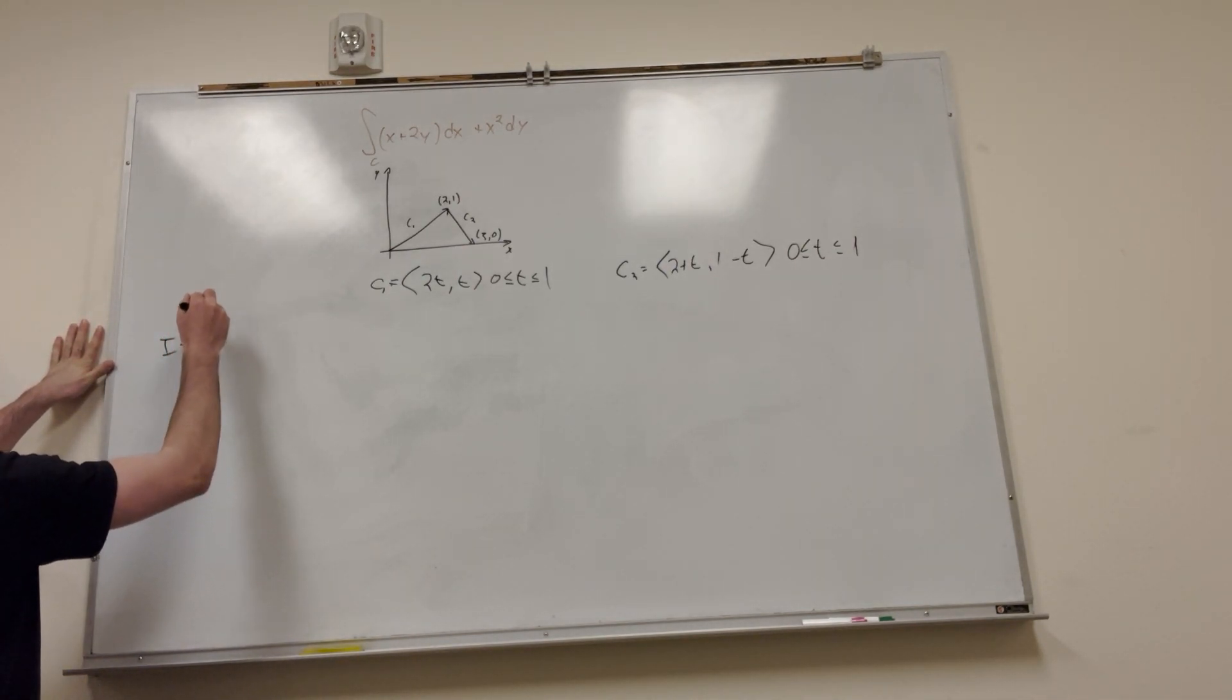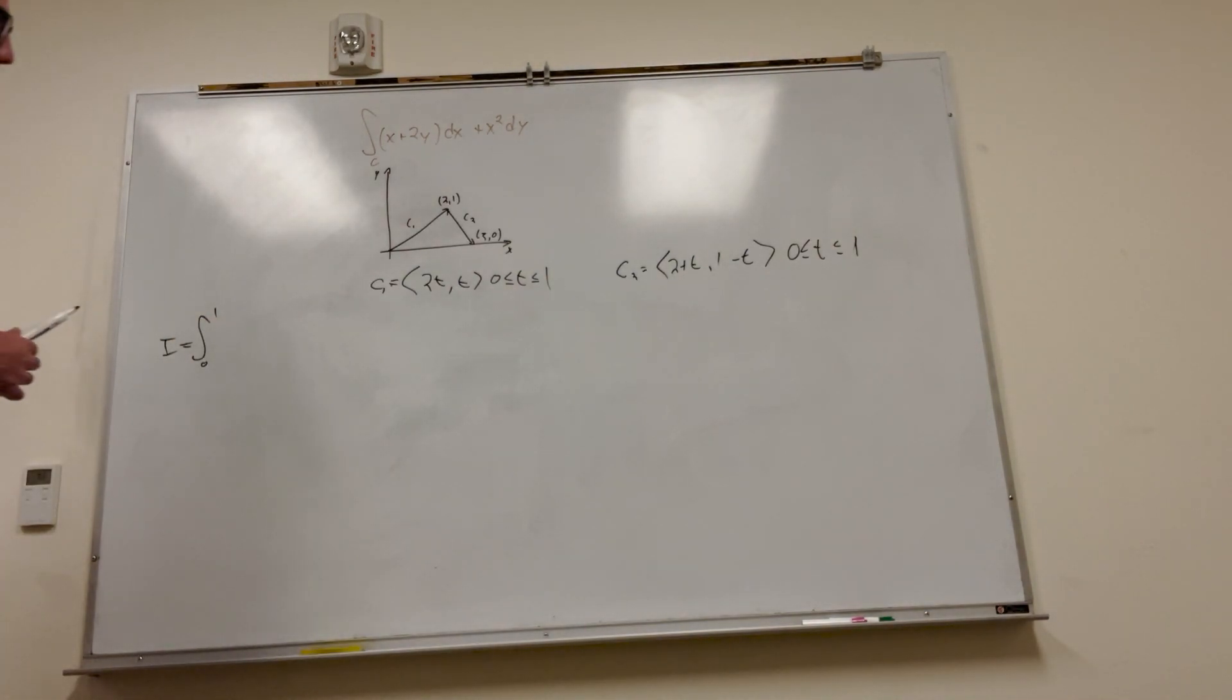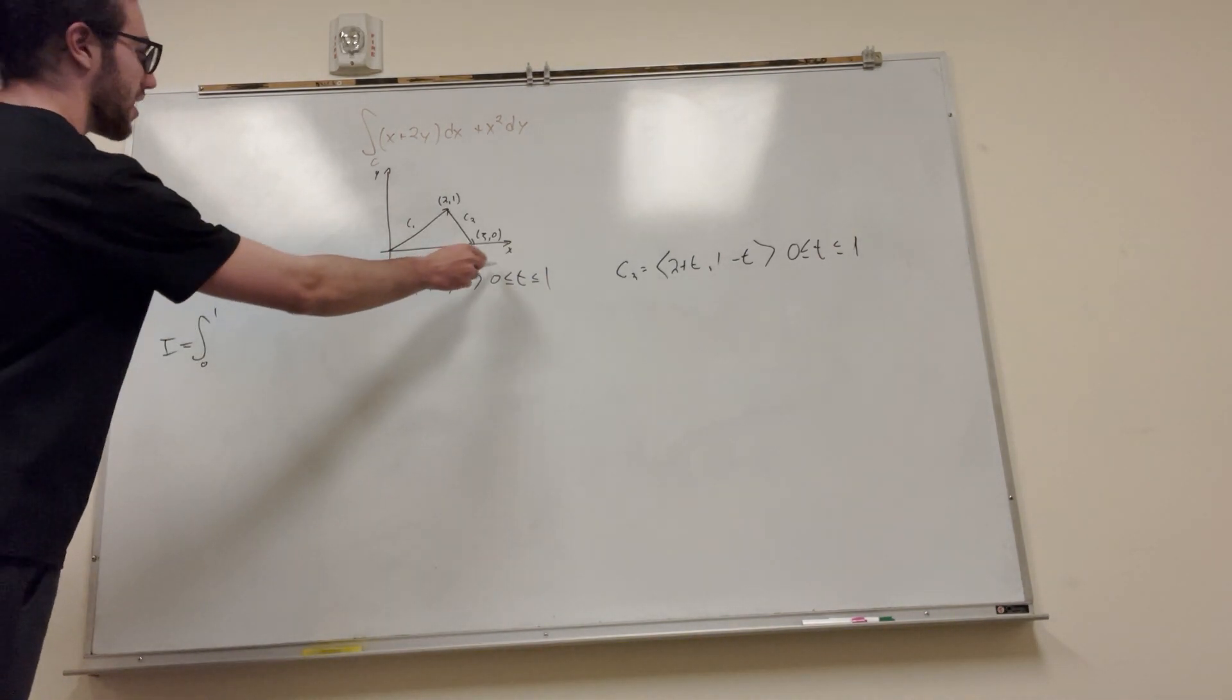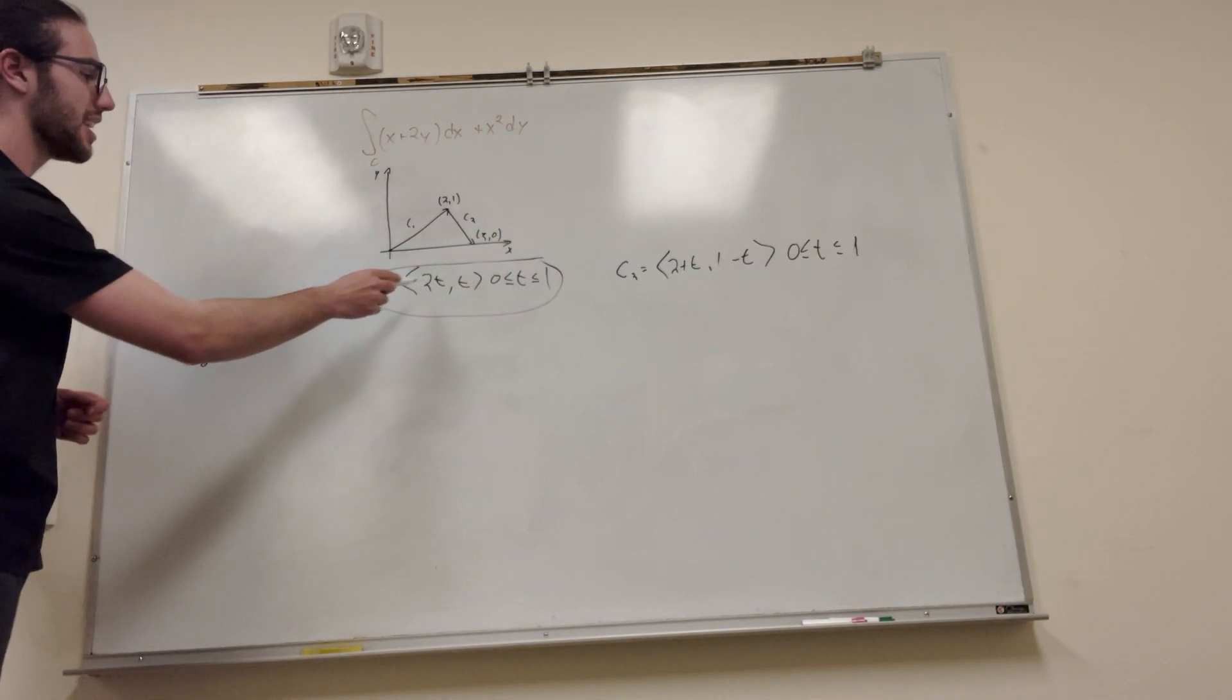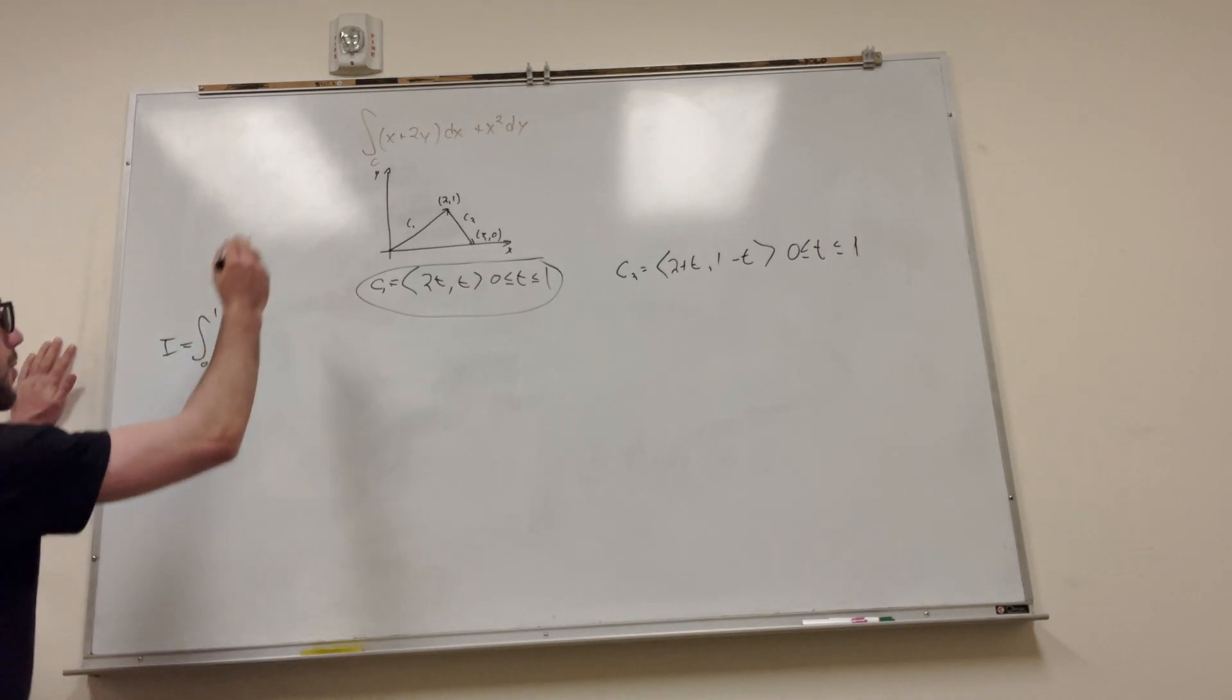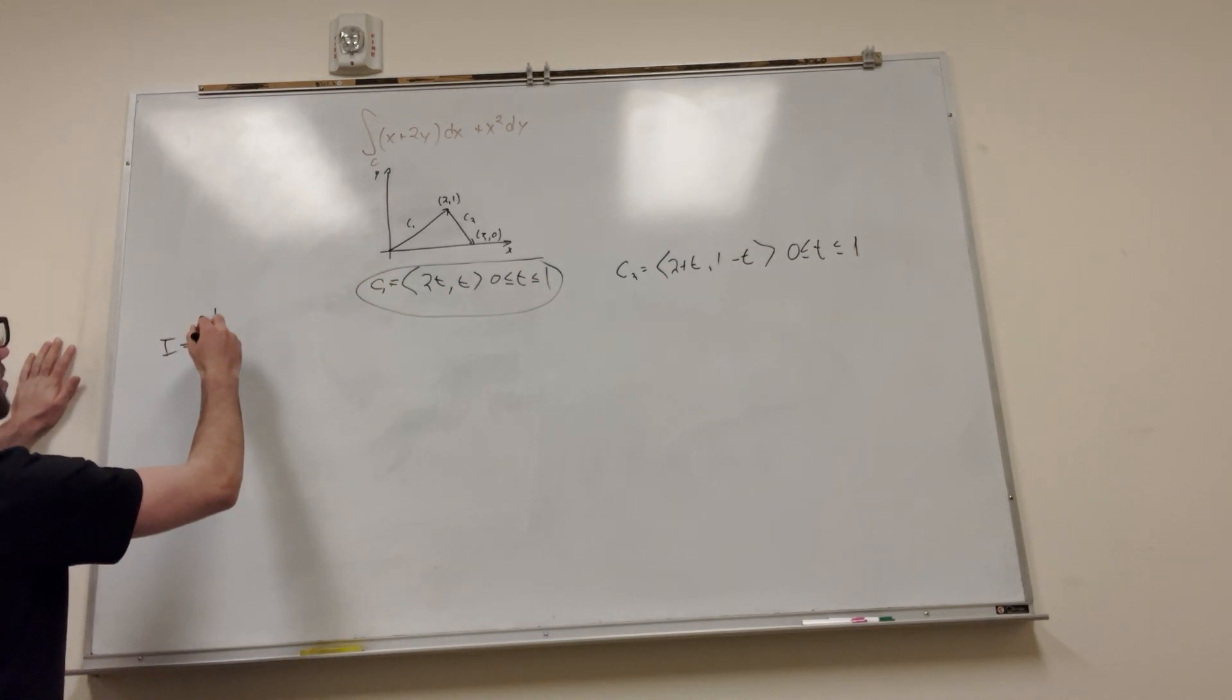So it's going to look something like this. So it goes from 0 to 1. All right, so our integral, we have that in our thing for the first line. We see that x is equal to 2t and y is equal to t, right? All right, so from 0 to 1, x is equal to 2t, so it's going to be 2t plus 2t. But then we do the dx.